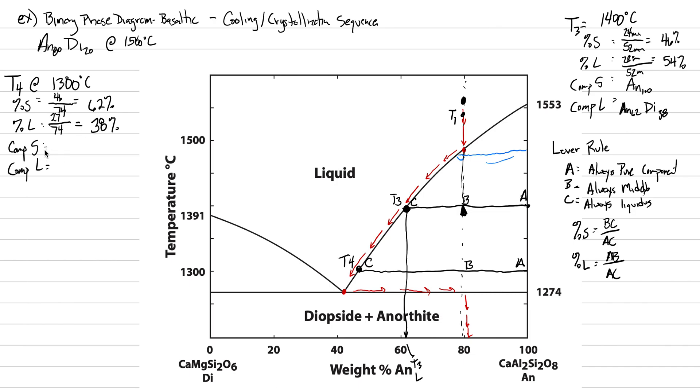The composition of our solid is still AN100. No other phase has joined the assemblage yet. We're still on the right-hand side. The composition of the liquid, we do a drop-down line, and this would be AN46DI54.